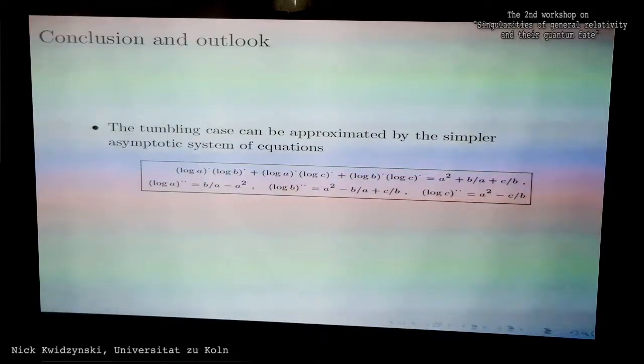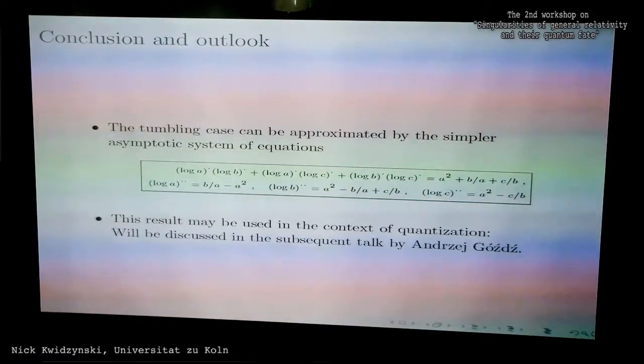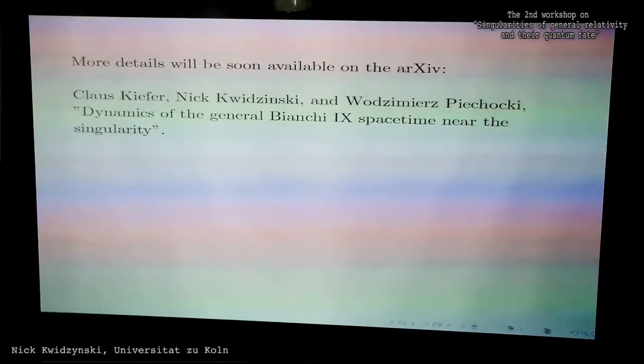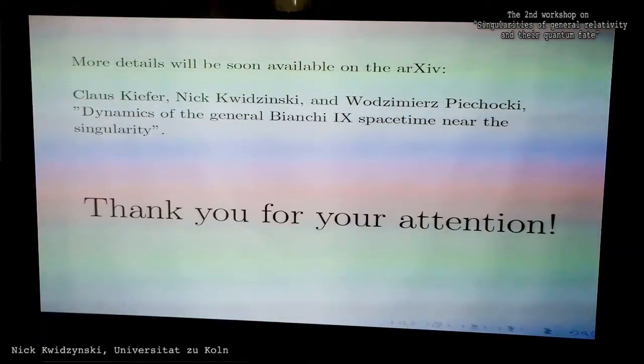Let me conclude. The tumbling case seems to be—it seems to be possible that it can be approximated by a much simpler asymptotic system of equations which has this form, as long ago suggested by BKL. This result may then also be used in the context of quantization, and this will be discussed in the subsequent talk. More details will be available soon on the arXiv. Thank you for your attention.